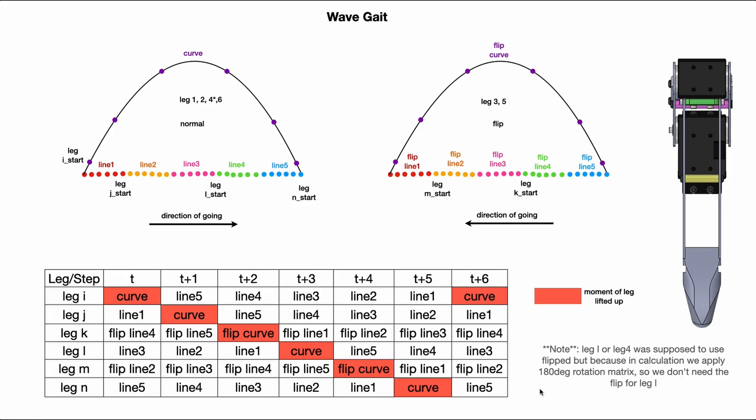For the wave gate, the idea is to keep 5 legs on the ground while only one leg is doing a swing phase. So each leg will have different starting point and it will keep looping over and over. So from the timetable, you could see that the curved motion or swing phase is showing only one leg at a time. This walking pattern is useful when you want to have a stable walking because there is only one leg in the air while other legs are pointing on the ground.